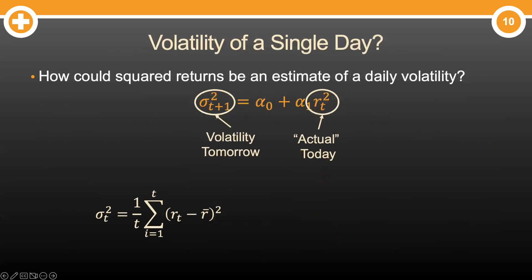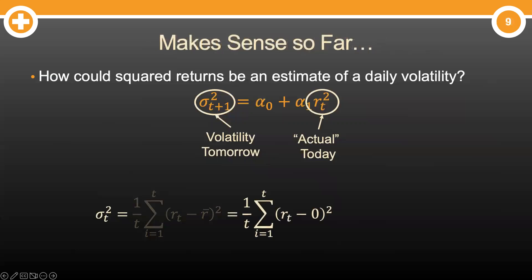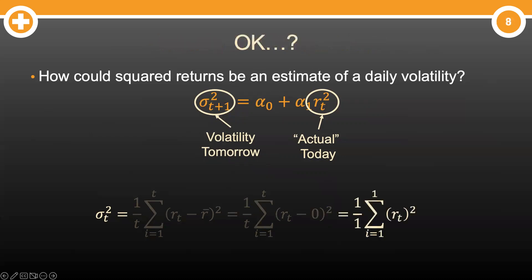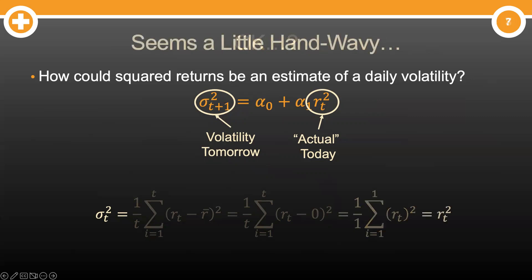What do you mean the volatility of a single day? Well, imagine that there are many possible values that today could take — those possible values have variance, but we only see the one that actually happened. How does squaring that value help with daily volatility? Look at the population variance equation. The average value of the returns is typically estimated to be approximately zero, so that piece is gone. Now we only have one day, so when we sum over one observation and time point, that leaves us with just the squared returns of today. It seems like cheating with math, but these models work really well in practice.